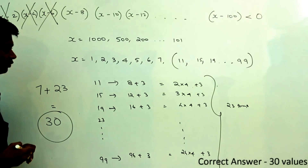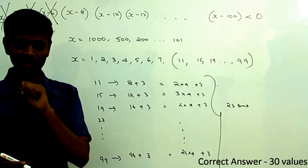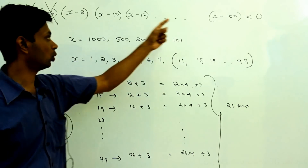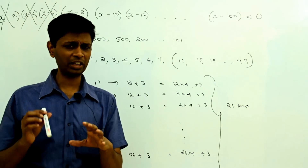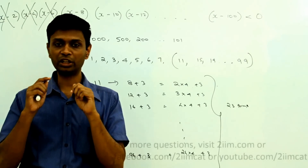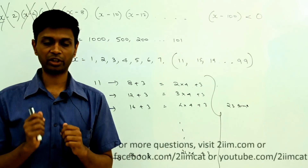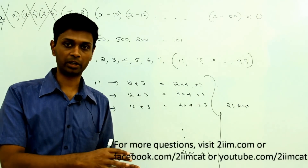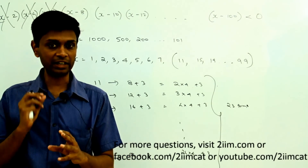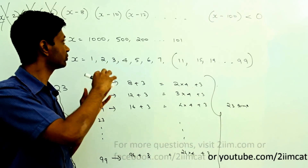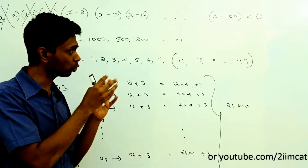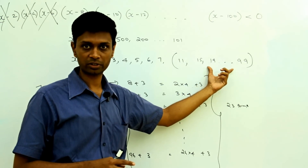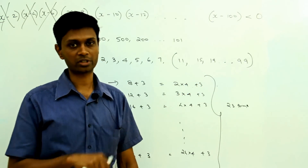So the answer is that x can take 30 different positive integer values where this inequality holds. This is based on the simple idea that the product of an even number of negative terms is positive and an odd number of negative terms is negative. Just that idea applied to this complex-looking question gives us the answer of 30. Very good question.